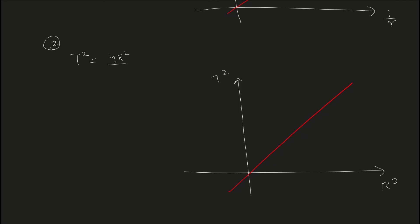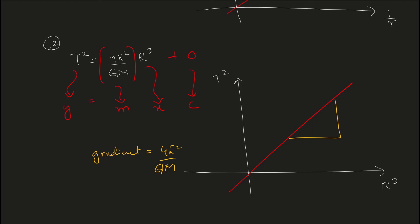This should immediately remind you of Kepler's Third Law. The equation is: T² = (4π²/GM) × r³. If I plot T² on the y-axis, that becomes my y; if I plot r³ on the x-axis, that becomes my x. The entire term 4π²/GM — where the mass of the planet, G, 4, and π² are all constant — becomes the gradient. There is no intercept, which is why the line passes through (0, 0).